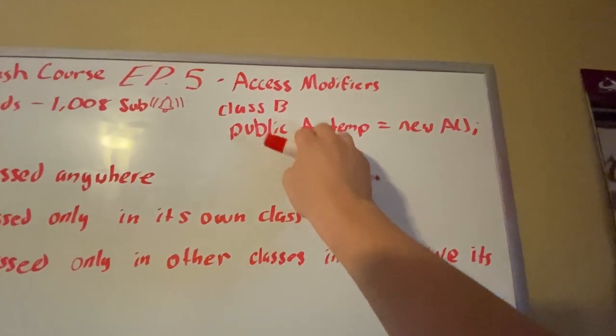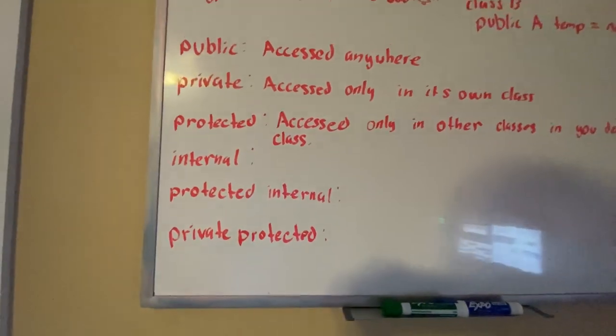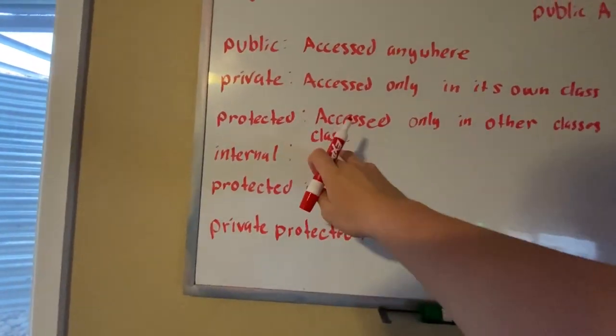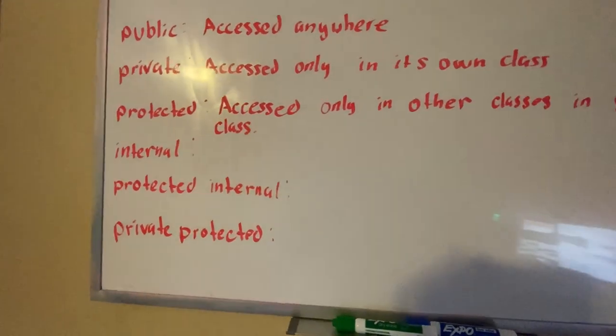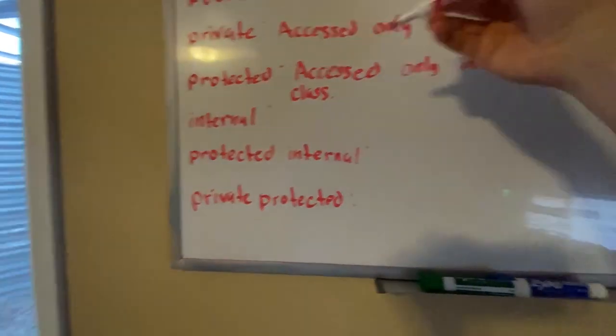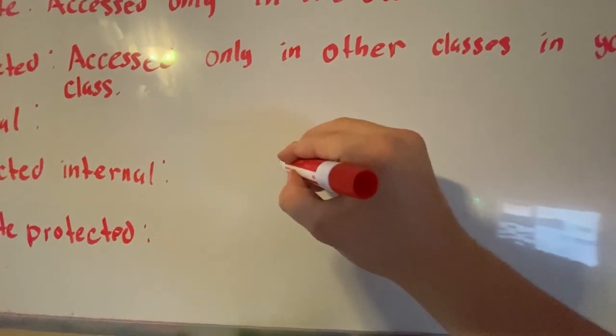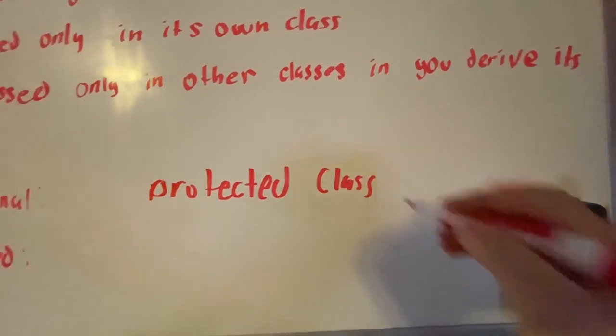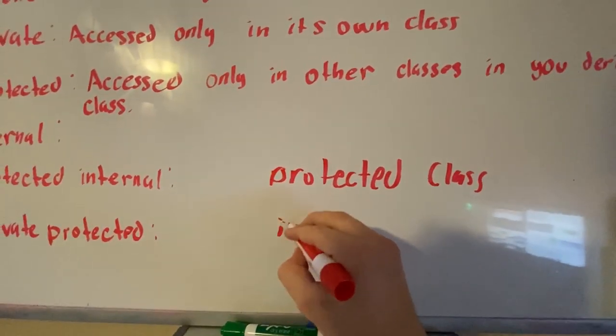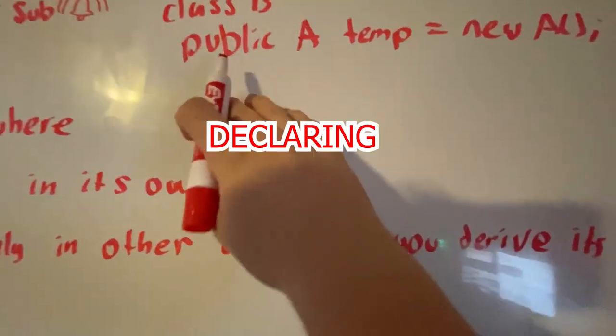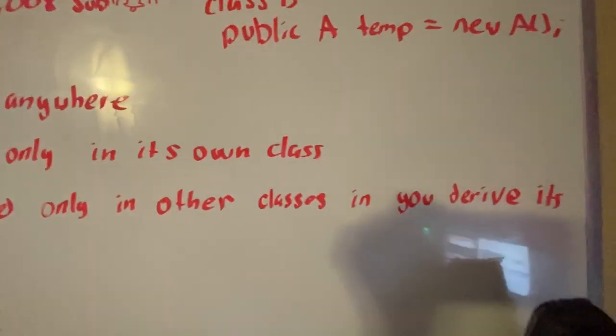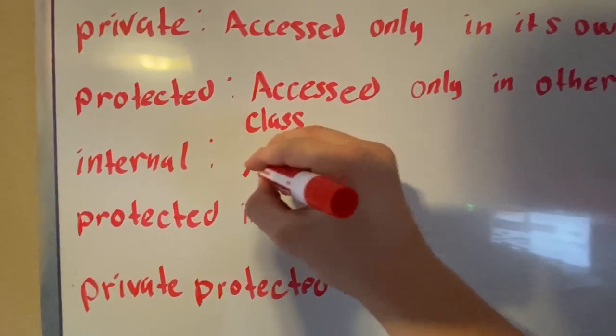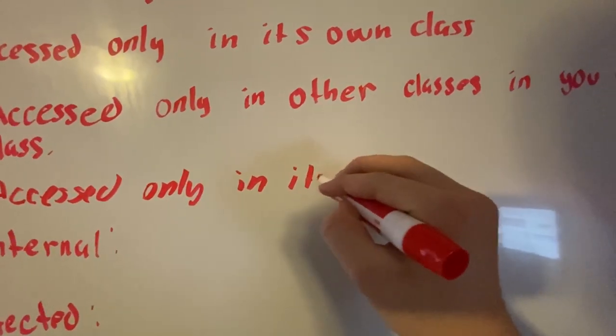Internal is where you cannot use any of the variable or you cannot use that variable outside of the project. You can add this to classes as well. These can honestly be used on class as well. You can literally do protected class, you can do internal class where you can only derive like this inside your project. You cannot just create a class outside of the project and try to derive it. So internal can only be accessed in its original projects.